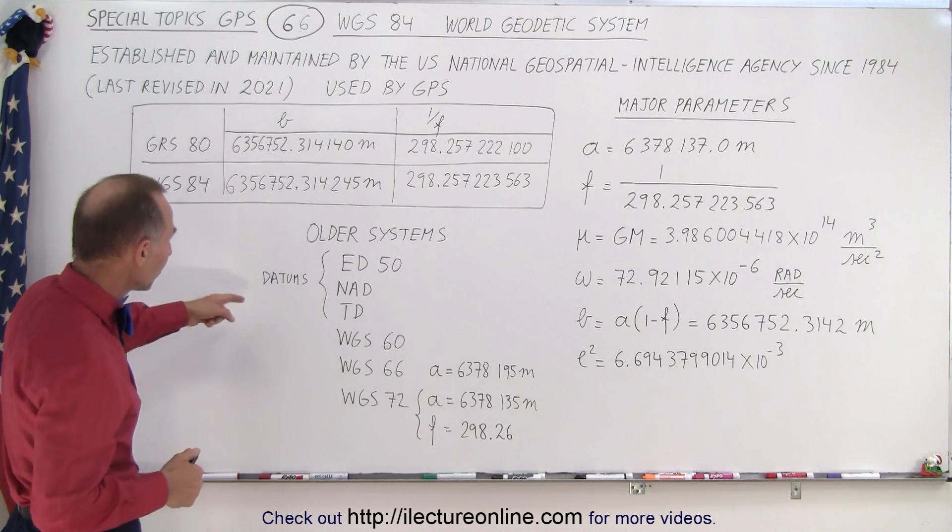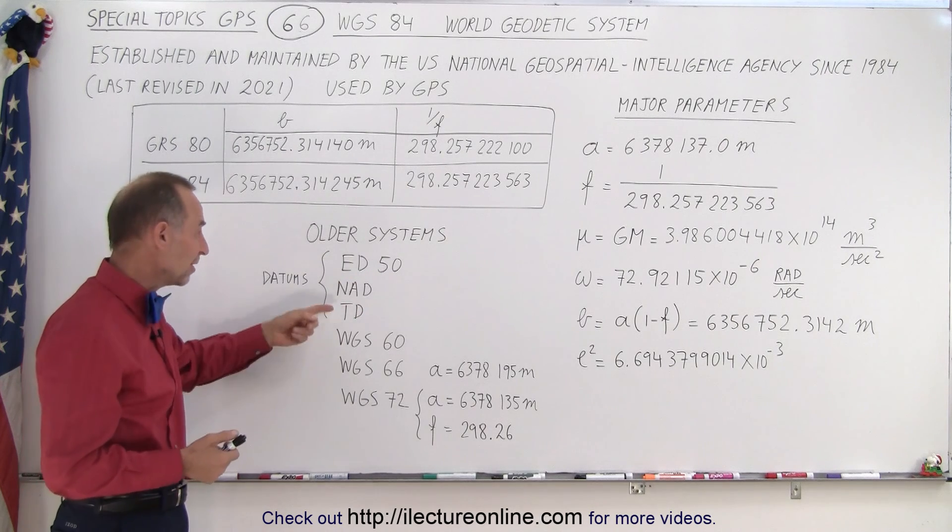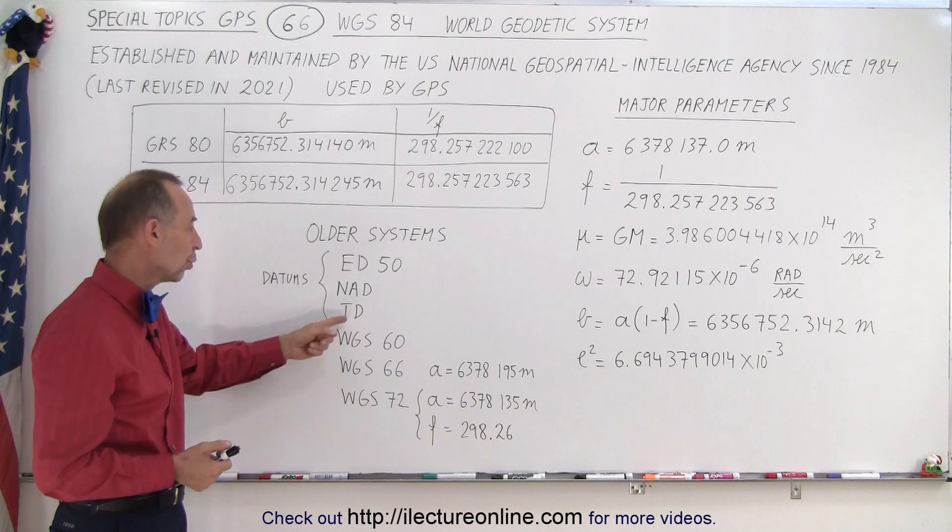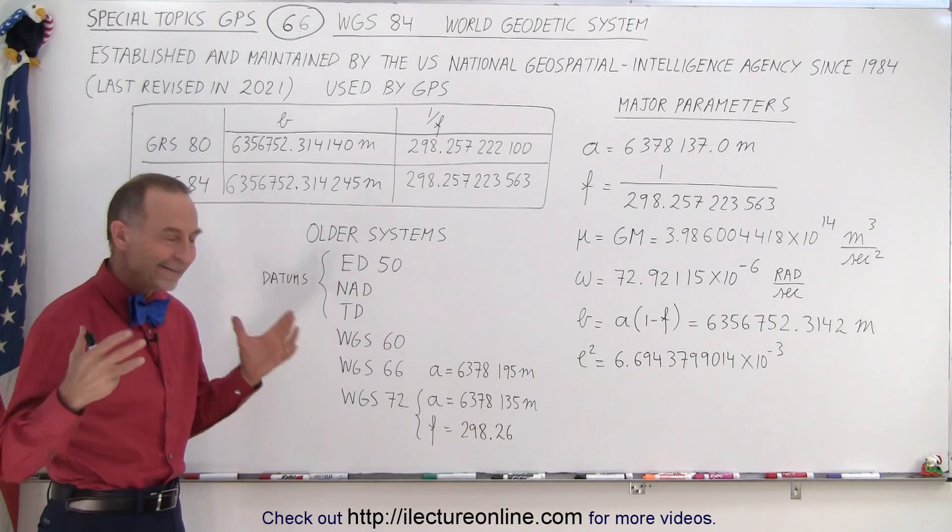Now the older systems, we have what we call the European Datum 50 established in 1950. We had the North American Datum. We had the Tokyo Datum. But we wanted something that was worldwide for the entire world.